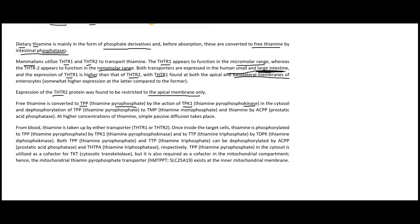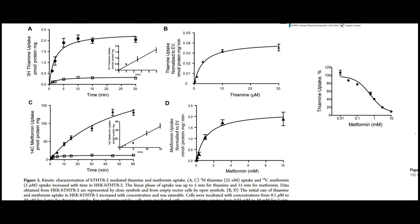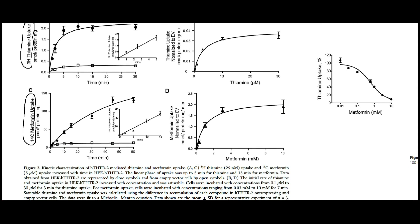Dephosphorylation of thiamine pyrophosphate to thiamine monophosphate and free thiamine is carried out by ACPP, the prostatic acid phosphatase. At higher concentrations of thiamine, simple passive diffusion takes place. There are also kinetics studies looking at competition between thiamine and metformin — a drug people with type 2 diabetes take to help control blood sugar — since both are taken up by THTR2.